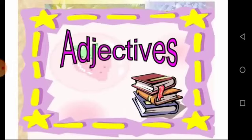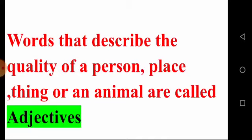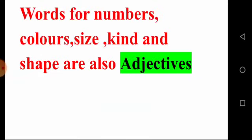Now everyone take your English concept book. What is an adjective? An adjective is a word that describes the quality of a person, place, thing, or an animal. Words for numbers, colors, size, kind, and shape are also called adjectives.